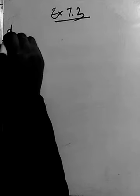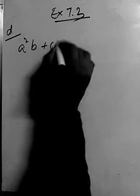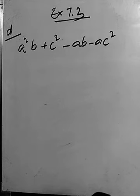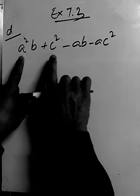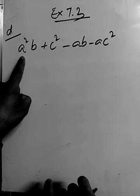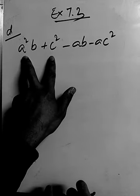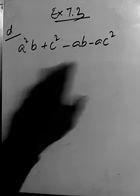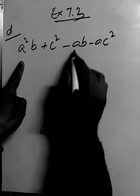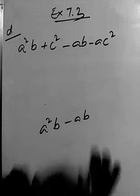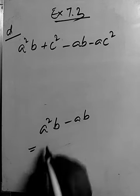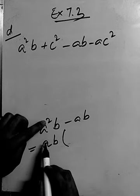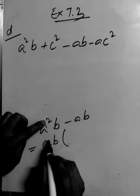Question D: A squared B plus C squared minus AB minus AC squared. We have four terms here. Looking at the first and second terms, there is no common factor except one. Let's try grouping the first and the third terms: A squared B and minus AB.